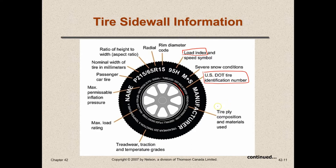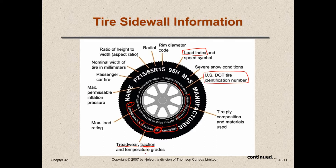Tire ply construction will tell you four ply or two ply — this is noted down near the rim. You'll also see tread wear, traction, and temperature ratings — tread wear has a number, traction has a letter, and temperature has a letter. Tread wear tells you how quickly the tire will wear out. Traction indicates how much traction it has — if you're always in mud, snow, and ice you want a higher letter. Temperature is how hot the tire can get due to friction with the road.